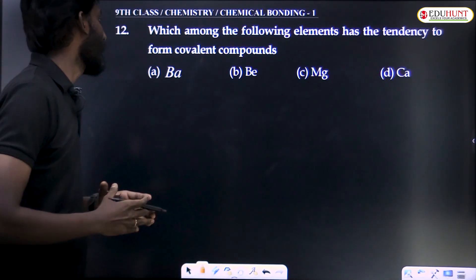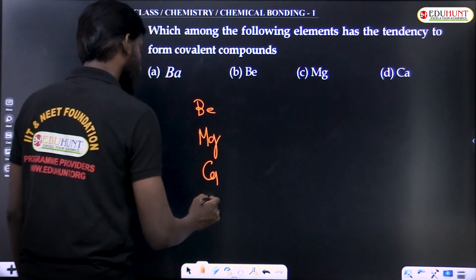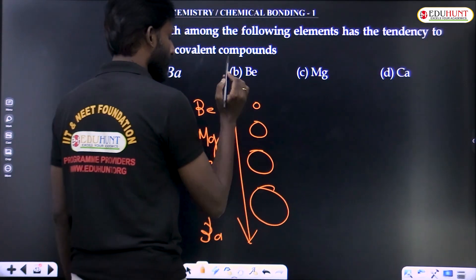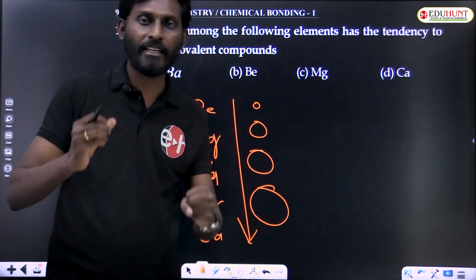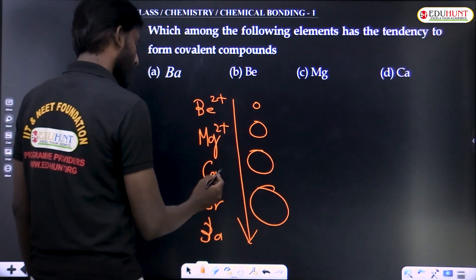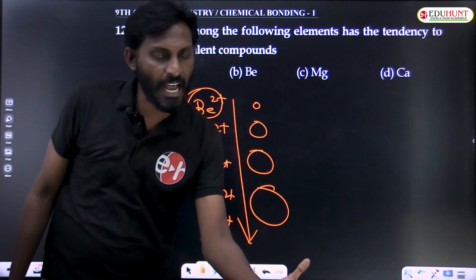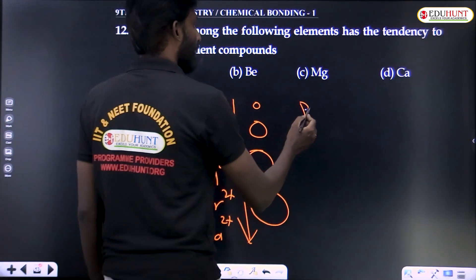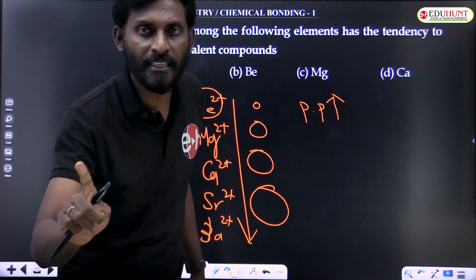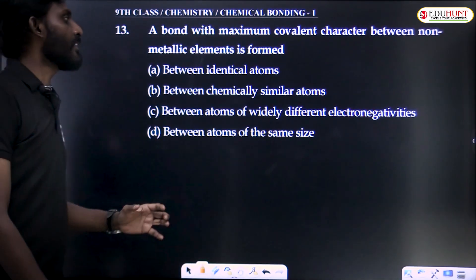Which among the following elements has the tendency to form covalent bonds? These are alkaline earth metals: beryllium, magnesium, calcium, strontium, barium. Size increases down the group. Considering cations: Be2+, Mg2+, Ca2+, Sr2+, Ba2+. Be2+ has the smallest size, so its charge density is highest. When cation charge density increases, polarizing power increases. When cation polarizing power increases, or anion polarizability increases, covalent character in ionic bonds increases. So beryllium has the most covalent character.